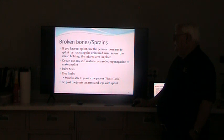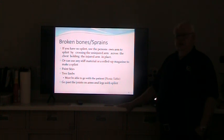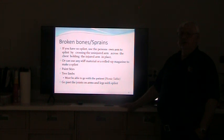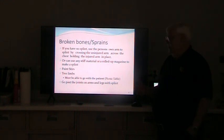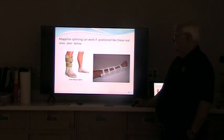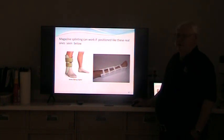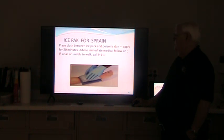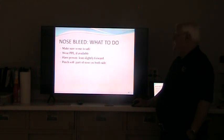Broken bones and sprains — for the most part, you have to think in the field. You're not going to have expensive splints with you. Look around — things like paint stirrers, tree limbs, or other rigid objects can act as a good splint. Always remember you want to splint above and below the joint to give you the protection you need. And remember: if you put a splint on that goes into the hospital, you will not get it back. An ice pack is good for a possible sprain; if they still have pain later, it still needs to be evaluated.